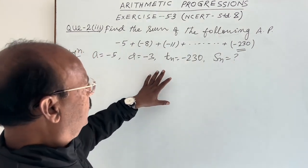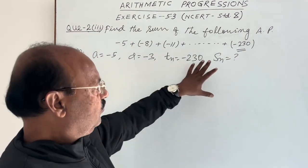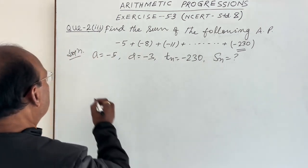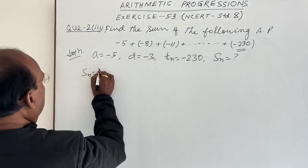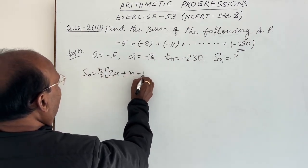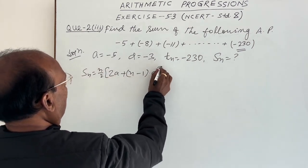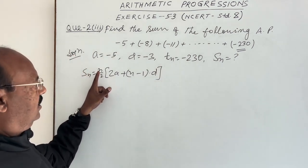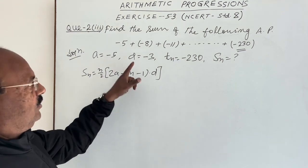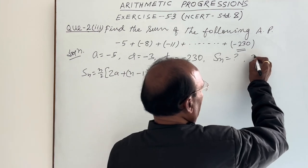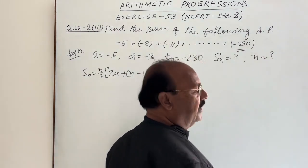But for finding the sum, we need value of N also, because we have to use the formula: Sn is equal to N by 2 times 2A plus N minus 1 into D. So we need value of N. Value of A and value of D are given. You need now value of N. So now we will try to find out value of N here.